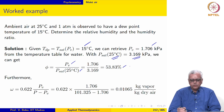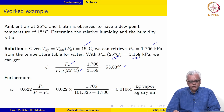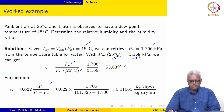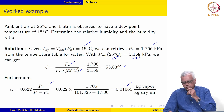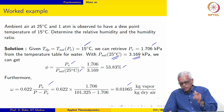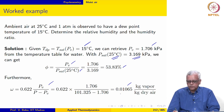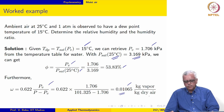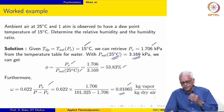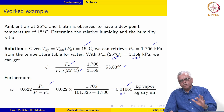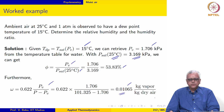We can also calculate the humidity ratio using this expression. Since we know PV, the humidity ratio comes out to be 0.01065 kg vapor per kg air. You can see that the amount of water vapor is not very high — it is usually on the order of a few grams.